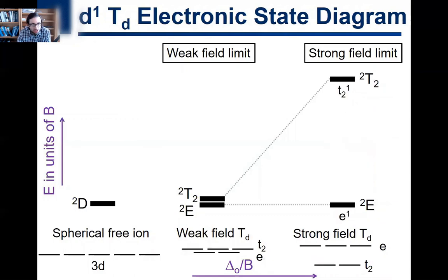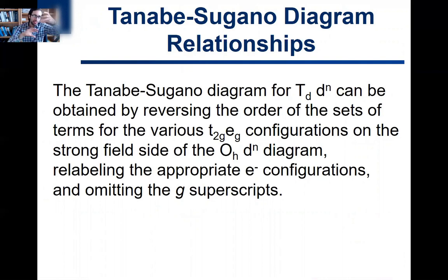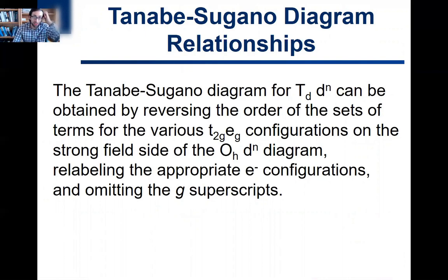Going back to our D1 octahedral Tanabe-Sugano diagram — doublet T2G ground state and doublet EG excited state — all we do is flip the ordering and drop the Gs to get the tetrahedral diagram: doublet E ground state and doublet T2 excited state. Now remember: D10 minus N also performs a flip. So going D10 minus N tetrahedral gives two flips, returning you to the DN octahedral ordering.